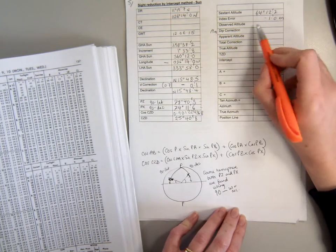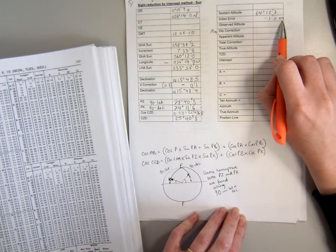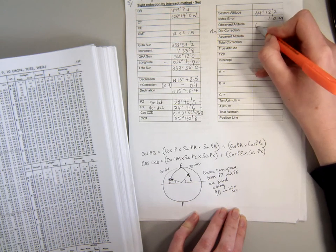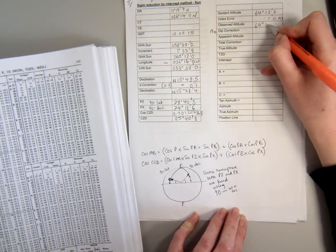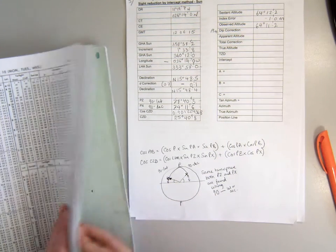The first thing we're obviously going to do is apply our index error of 1.0 on the arc, so that's a subtraction. We end up with 64 degrees 11.2.